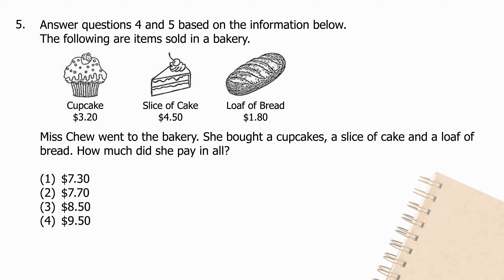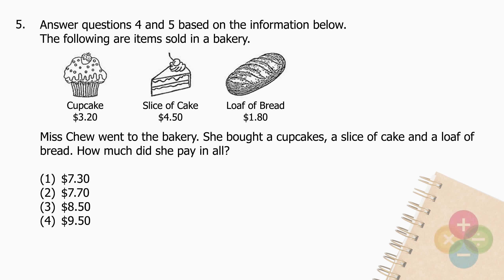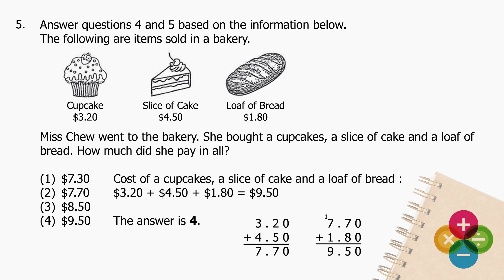Question 5: Miss Chew went to the bakery. She bought a cupcake, a slice of cake, and a loaf of bread. How much did she pay in all? The cost of a cupcake at $3.20, a slice of cake at $4.50, and a loaf of bread at $1.80 — the sum is $9.50. The answer is 4.